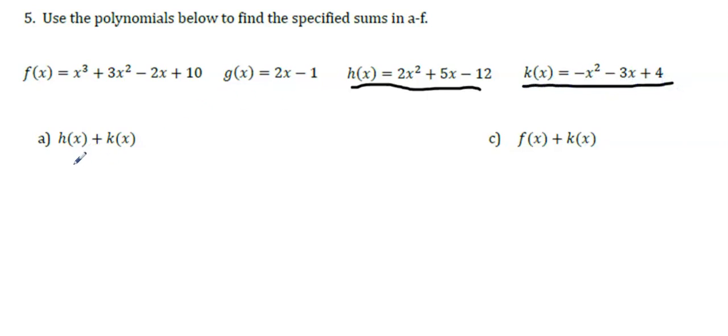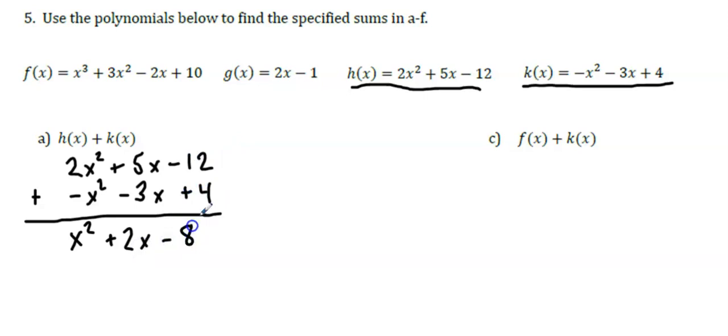I'm going to stack them on top of each other. So now I have 2x² minus x², which leaves me with 1x². 5x minus 3x leaves me with a positive 2x, and then -12 + 4 gives me -8, which I'll write as minus 8.